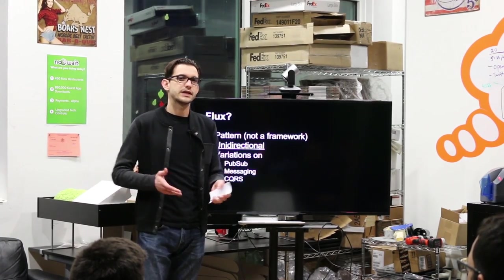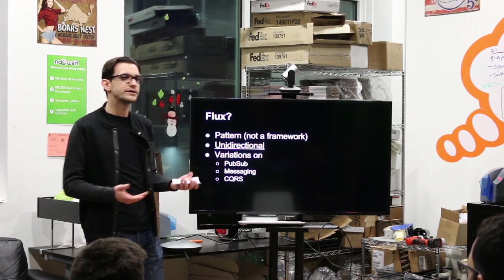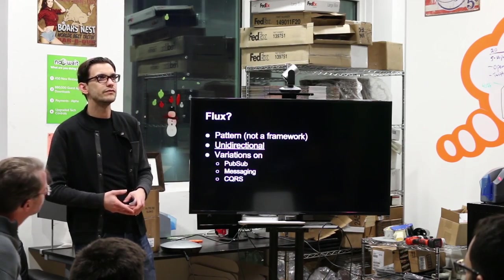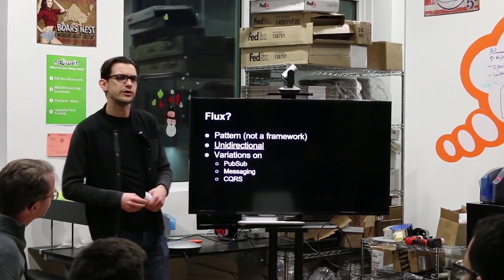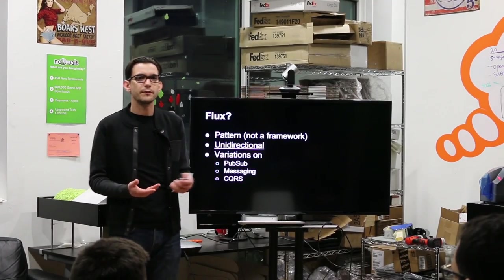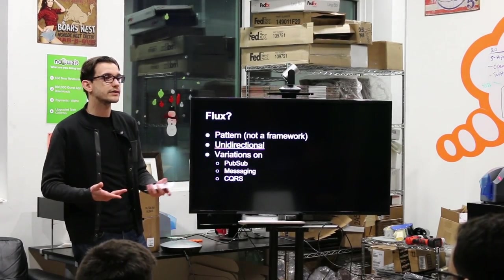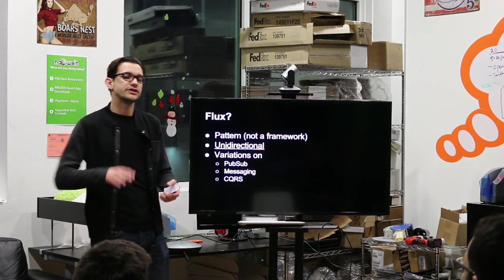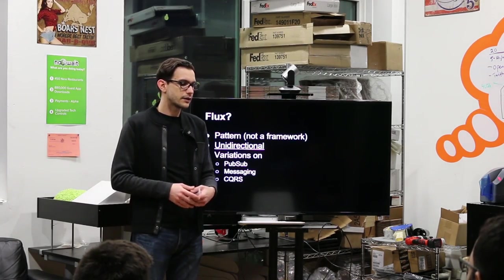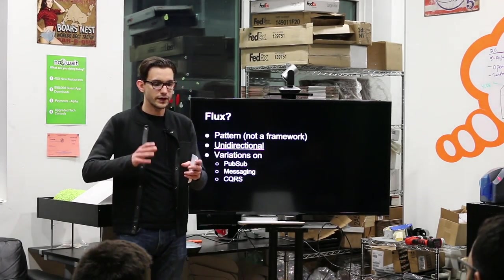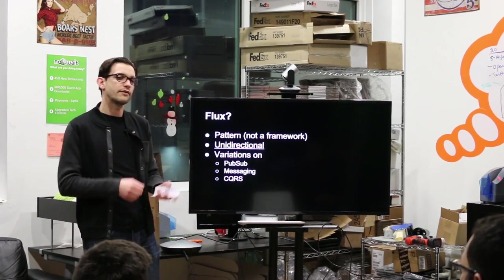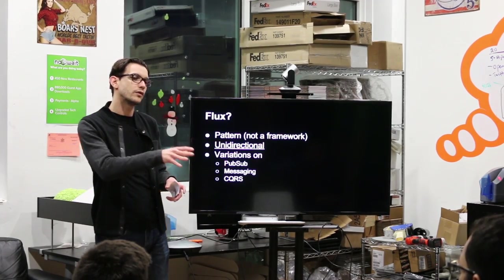Basically Flux is a pattern that Facebook came up with not too long ago, like I would say around a year, and it emerged from them using React. So, React is a JavaScript library that is just a view layer. And this library is basically very unidirectional. Everything that comes in, it's just one way data binding.